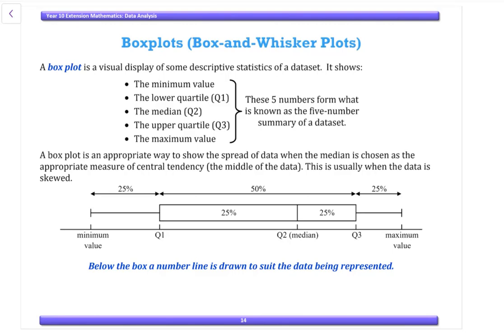This video looks at box plots which are also called box and whisker plots. Now a box plot is a visual display of some descriptive statistics of a data set. It shows what we call the five number summary, and these are the five things that you need to show.